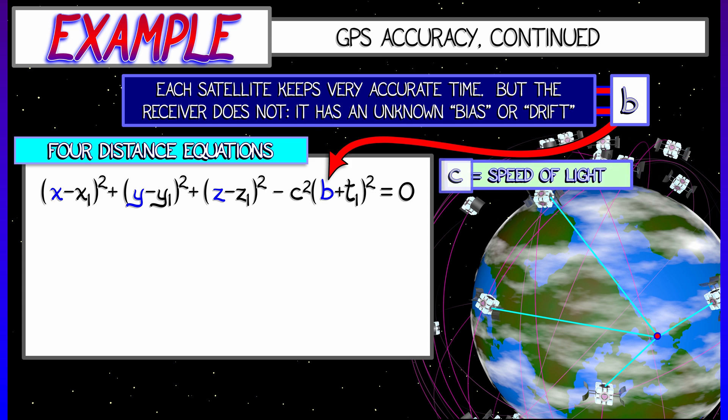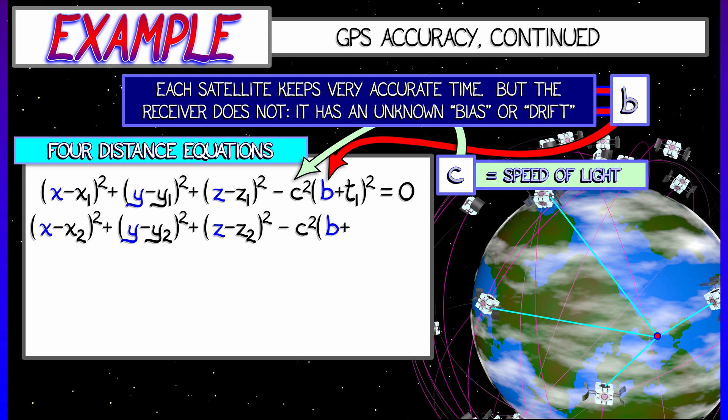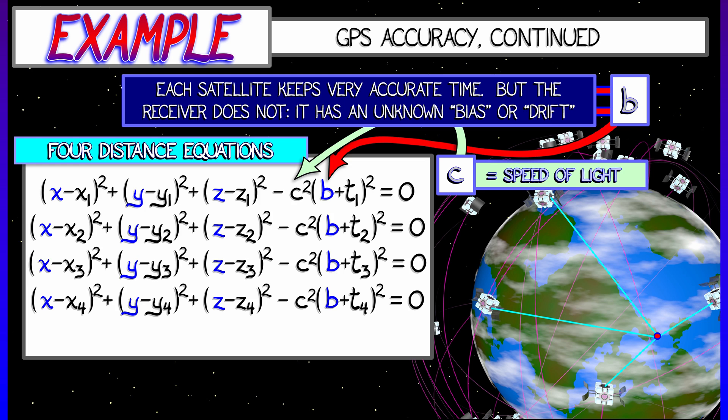This is going to be quantity b plus the time difference squared, where b is the bias, all times c squared, where c is the speed of light that converts the time difference into a physical distance. Okay, so you have one of these quadratic equations for each satellite that you are connected to.